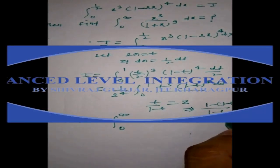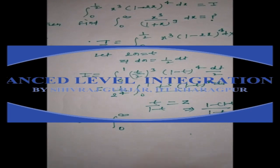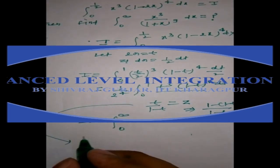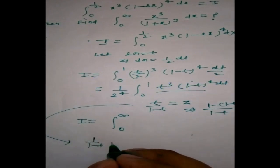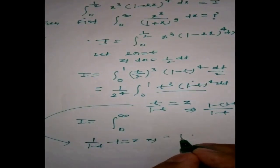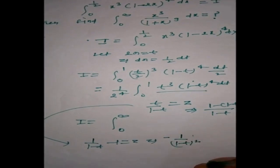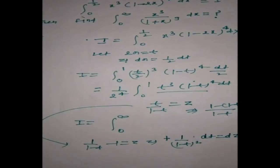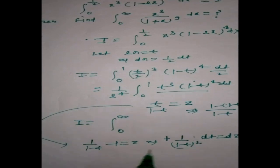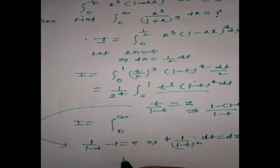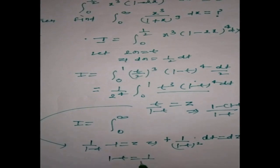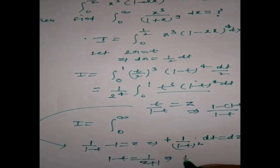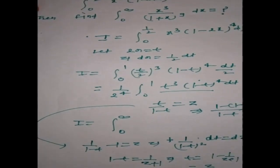Working this out: 1 minus t = 1/(z+1), so t = z/(z+1). Differentiating, dt = 1/(z+1) squared dz. Also 1 minus t equals 1/(z+1).